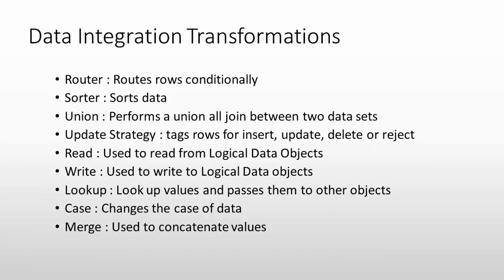Further data integration transformations include router, sorter, union, update strategy, read, write, lookup, case, and merge. The router is used to route rows conditionally — we can use conditional operations in the mapping to route the output after a specific condition is achieved.